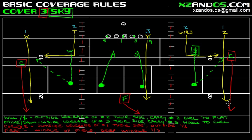One of the weaknesses of Cover 3 is if you get four verticals — two up the seam and two on the outside — it's basically four on three, knocking off the top of the defense. Know the strengths and the weaknesses of every zone defense. A Cover 3 Sky does get a safety down in the box to help against the run as well. This video has been discussing the basic coverage rules of the Cover 3 Sky, and I hope it's improved your knowledge of the game whether you're a player, coach, or fan. Please like the video, subscribe to the channel if you're new, and there will be more videos to come.